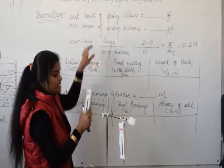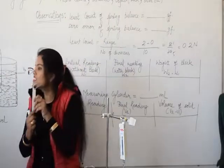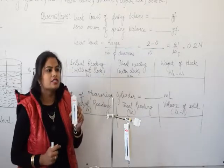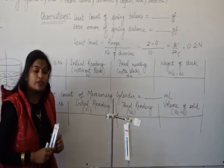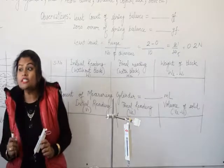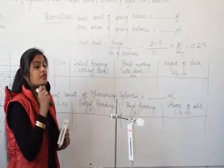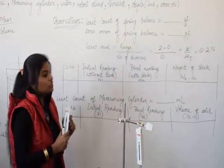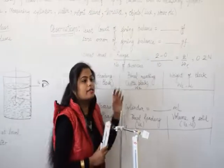In this case you can see zero error for this is zero. You can see pointer is lying at zero. After that least count. How to calculate least count? Least count is the least measurement which we can measure from this instrument.